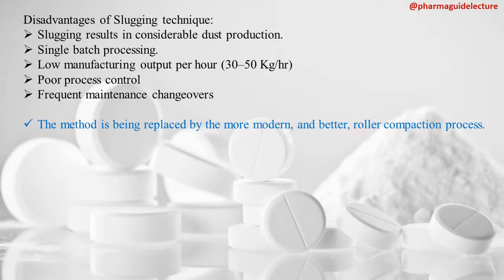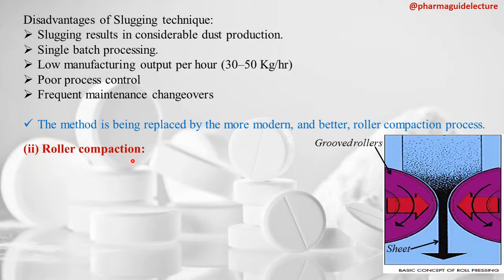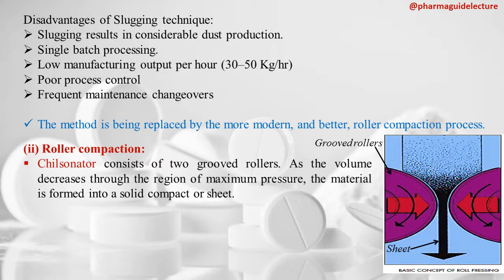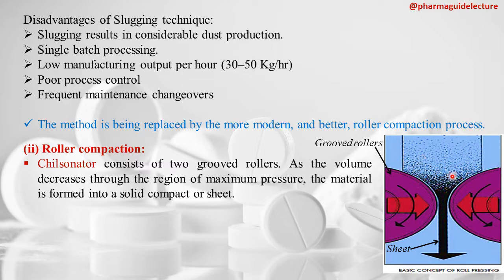The second technique is roller compaction using a Chilsonator. The Chilsonator consists of two grooved rollers. As the powder material passes between the rollers, the volume decreases through the region of maximum pressure, and the material is formed into a solid compact or sheet.